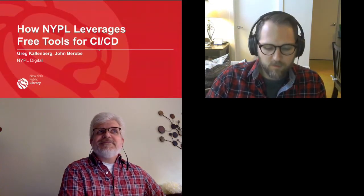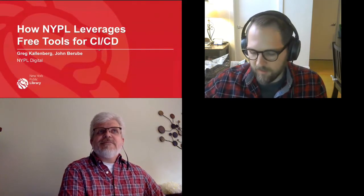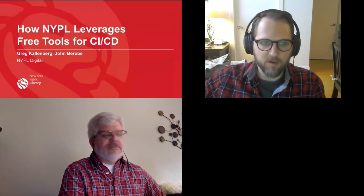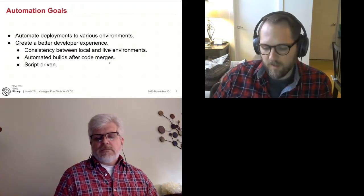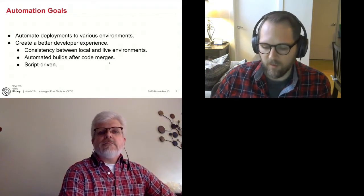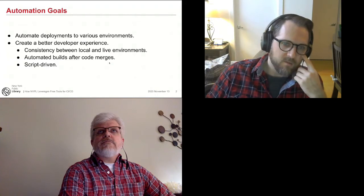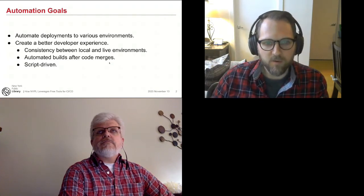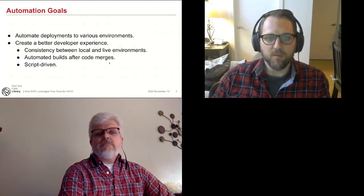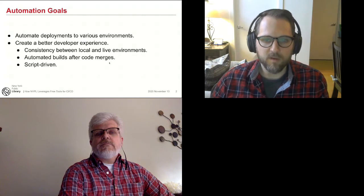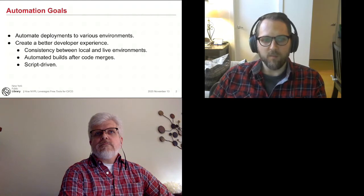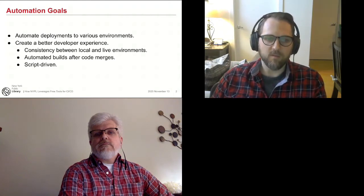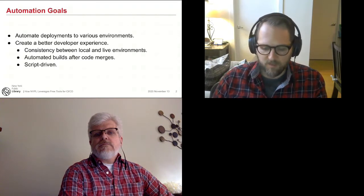At the library, we use Drupal for our main website. Our goals for automation were to automate deployments to our various environments: we have a dev environment, a QA environment, and a production environment. We also wanted to create a better developer experience — better consistency between the different local environments for developers and live environments. It automates our builds after code merges, and we wanted to make it script-driven, so anything we need to do to set up a server can be done automatically.